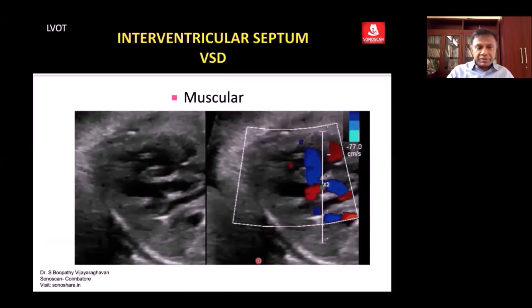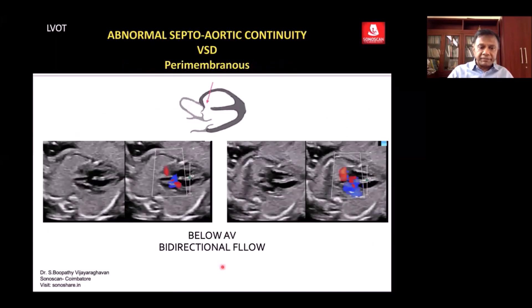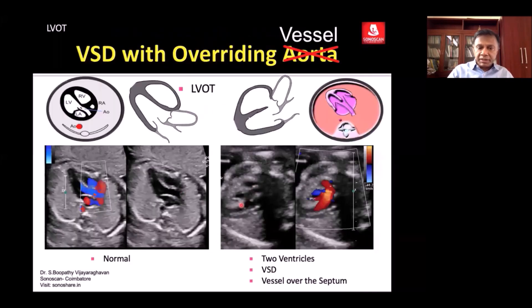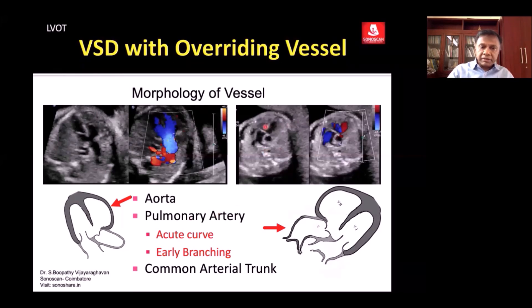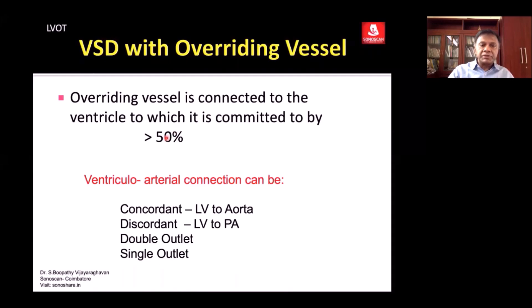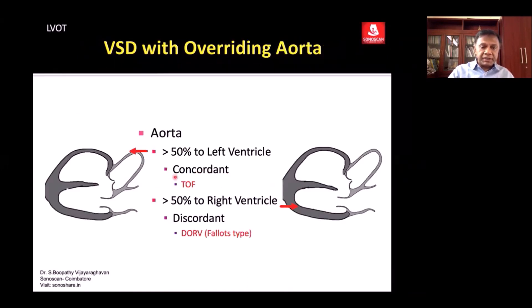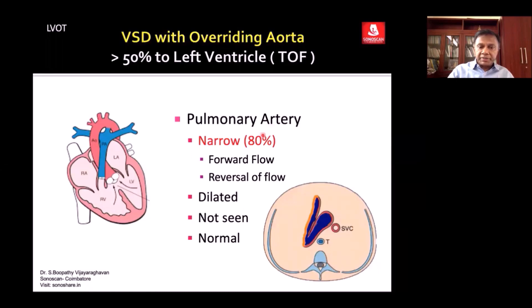You see bidirectional flow, and then a perimembranous VSD more aligned. Here you see a perimembranous VSD without malalignment, but here you see a VSD with an overriding aorta. Overriding aorta: we cannot straight away call it the aorta because it could be another vessel. Whereas the pulmonary artery will have an acute curve posteriorly, the aorta goes towards the right shoulder and you see early branching. If more than 50% committed to the right ventricle, based on this definition the ventricular-arterial connection is Tetralogy of Fallot.